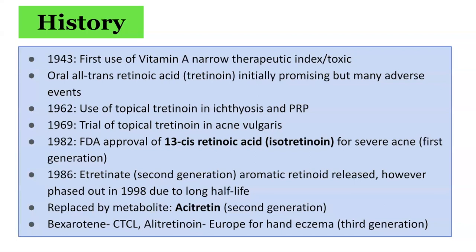In the 1980s, isotretinoin, which is the retinoic acid derivative of vitamin A, was FDA-approved for severe acne due to its excellent clinical outcomes. That was a first generation retinoid and it's currently still in use today. In 1986, etretinate was tested — a second generation aromatic retinoid — however, it was later phased out due to its significantly long half-life. This was replaced by its metabolite acitretin, also a second generation retinoid. Later, several third generation retinoids were developed, including bexarotene, approved for cutaneous T-cell lymphomas, and alitretinoin, approved in Europe for chronic hand eczema.